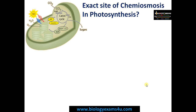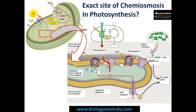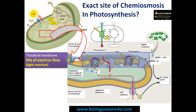The most important thing to understand this concept is to know the exact site of chemiosmosis in photosynthesis. The organelle involved is the chloroplast. This is the site of the light reaction — the thylakoid, and thylakoid sacs stacked one above the other are called grana. The thylakoid membrane is the site of electron flow, where photosystems are arranged with many electron carriers in between.